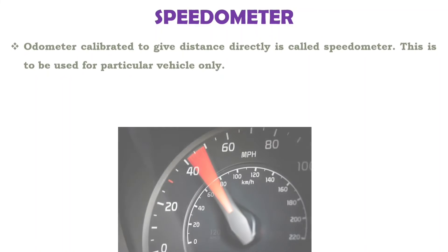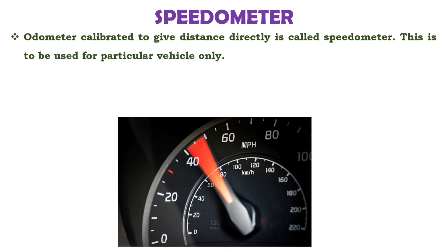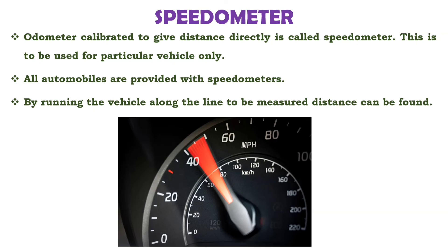The next method is speedometer. Odometer calibrated to give distance directly is called speedometer. This is to be used particularly for vehicles only. All automobiles are provided with speedometer. By running the vehicle along the line to be measured, the distance can be found. All these methods are approximate methods of linear measurement.